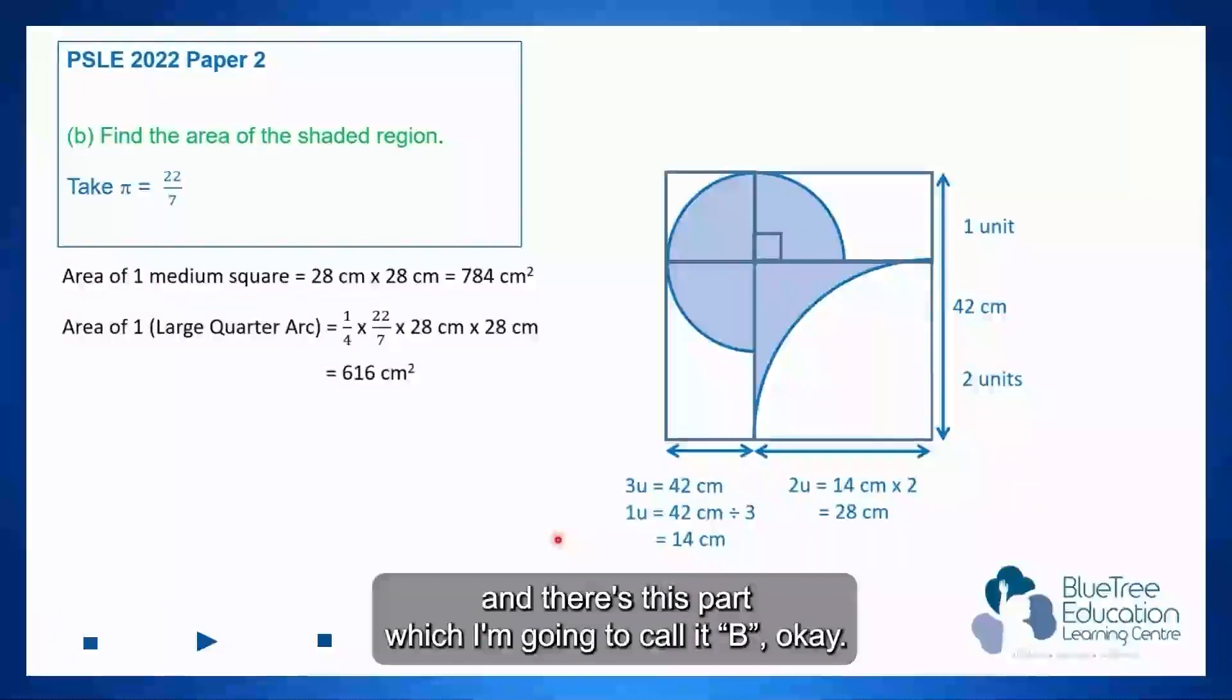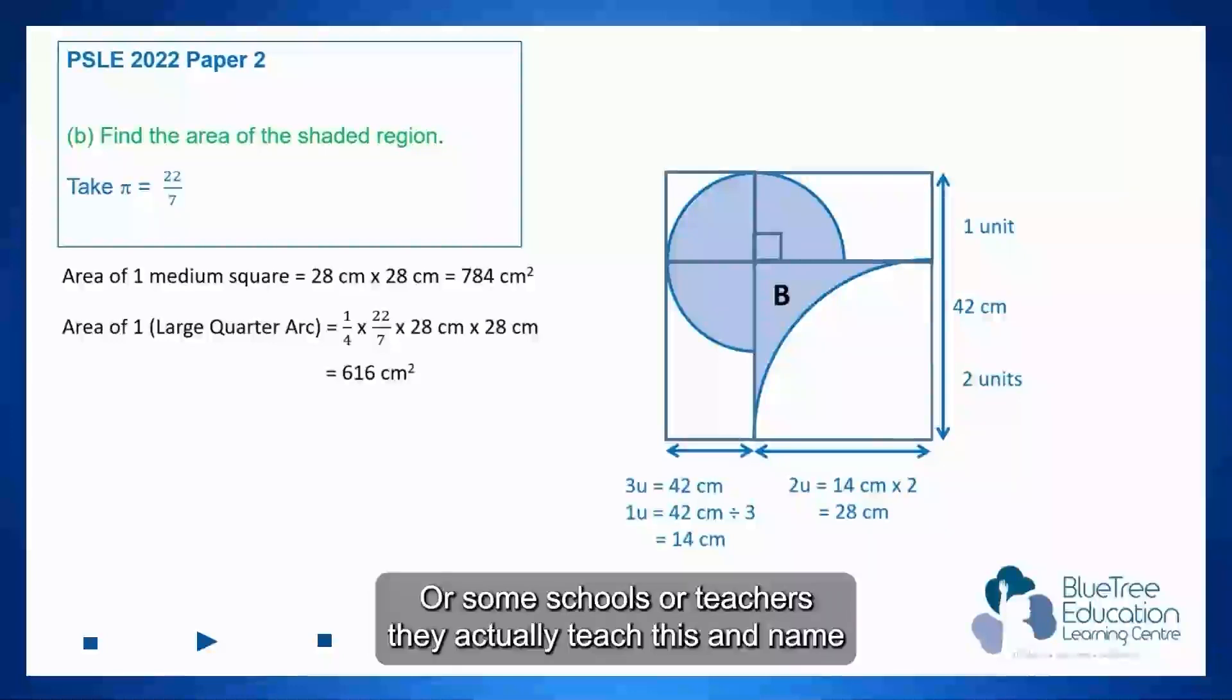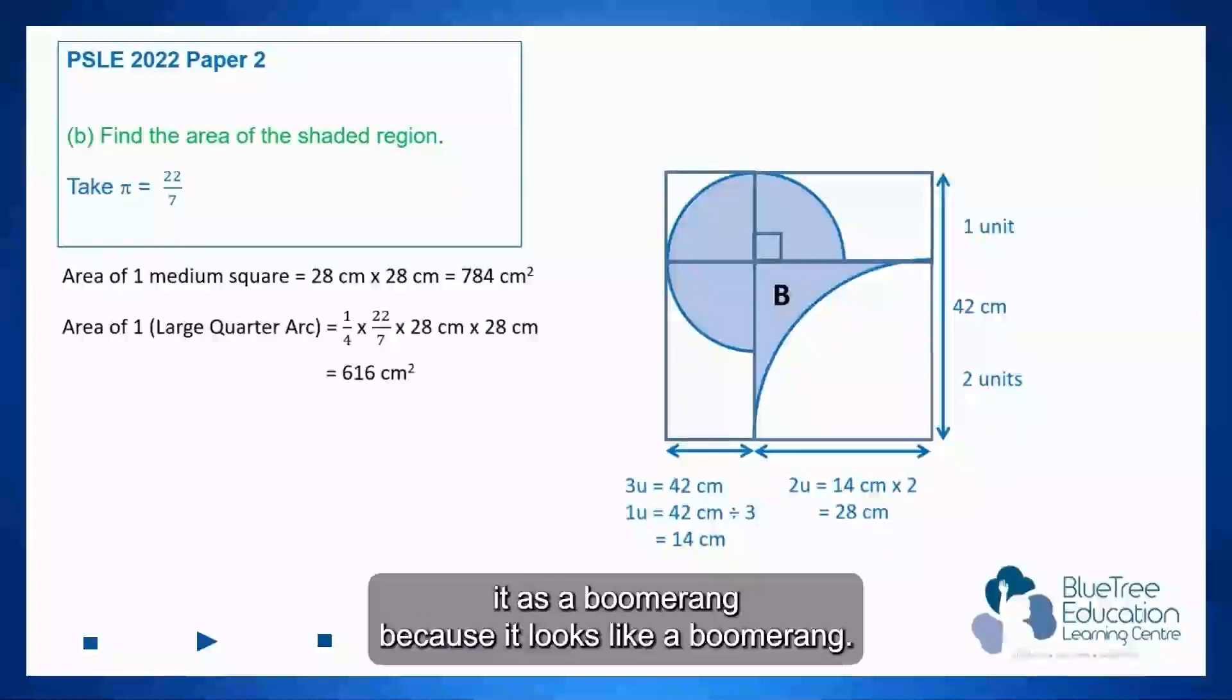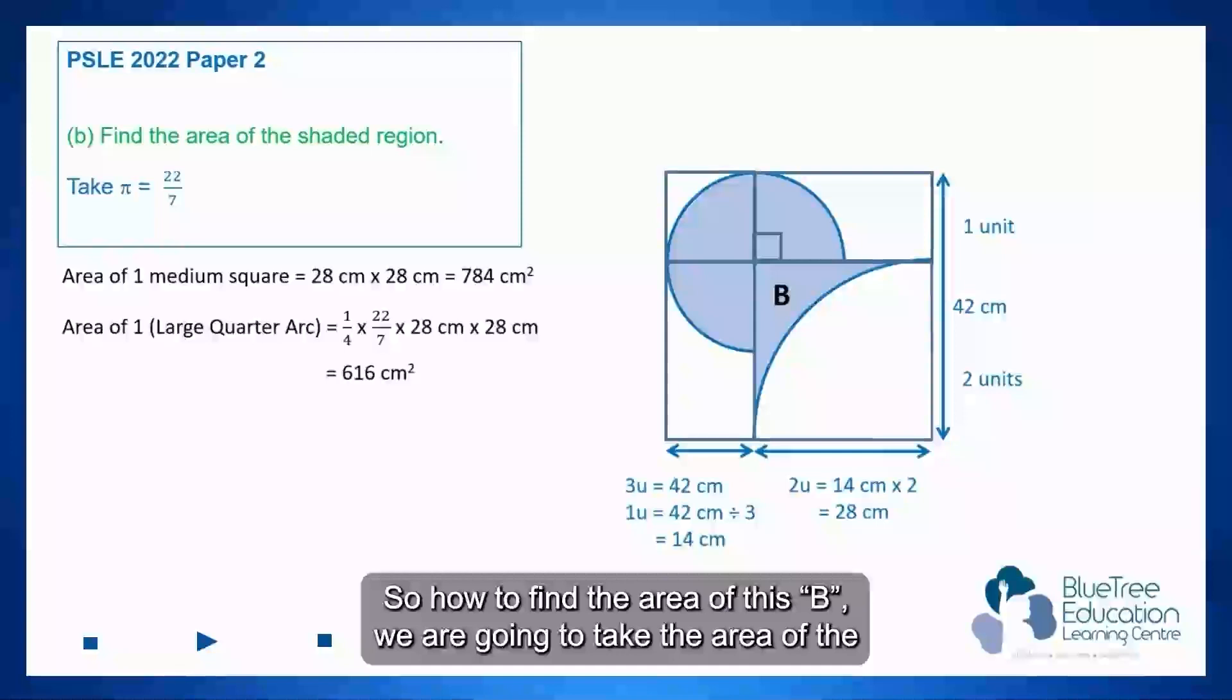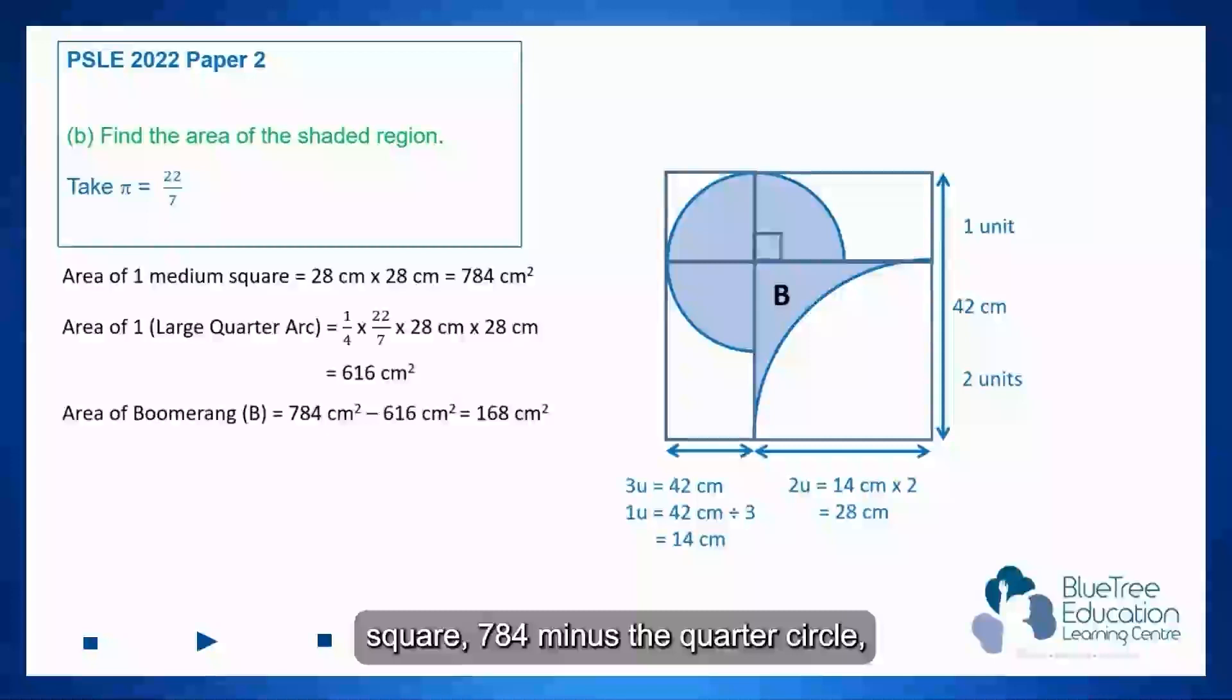And there's this part which I'm going to call it B or some schools or teachers they actually teach this and name it as a boomerang because it looks like a boomerang. So how to find the area of this B? We are going to take the area of the square 784 minus the quarter circles and that will give us the answer 168.